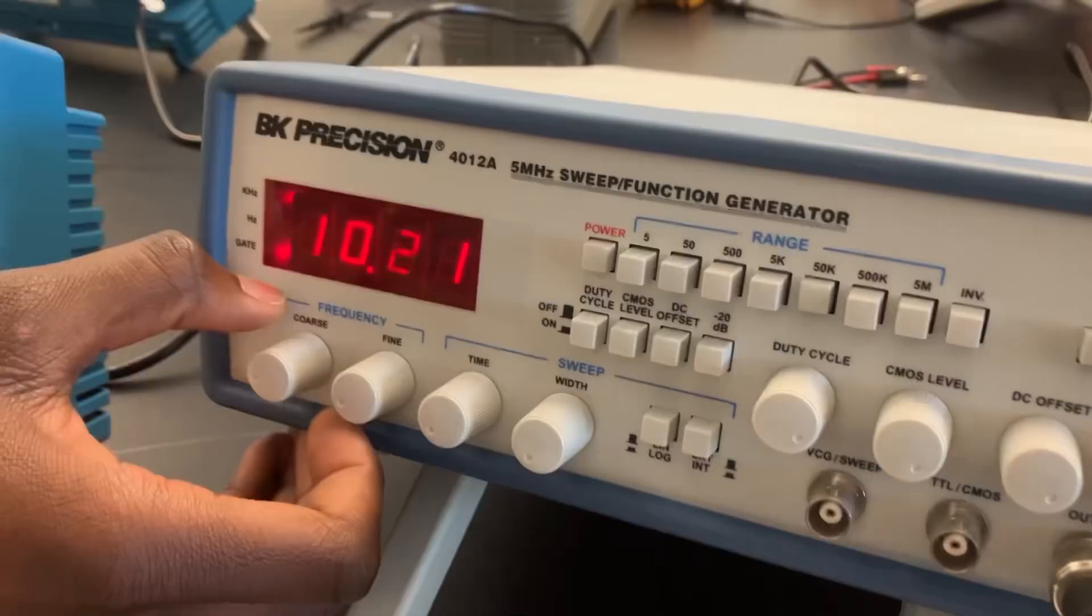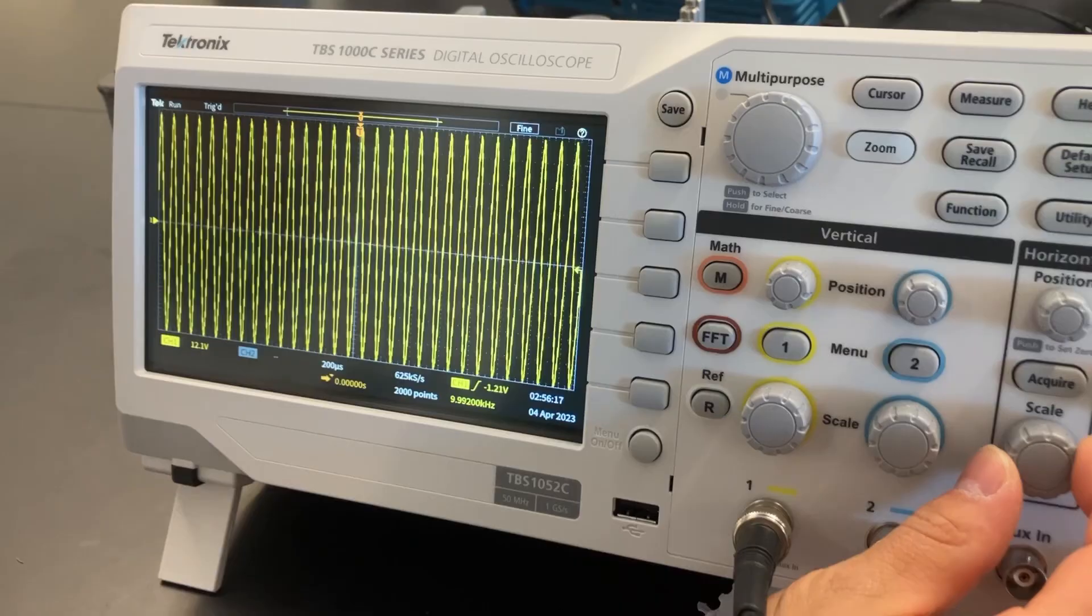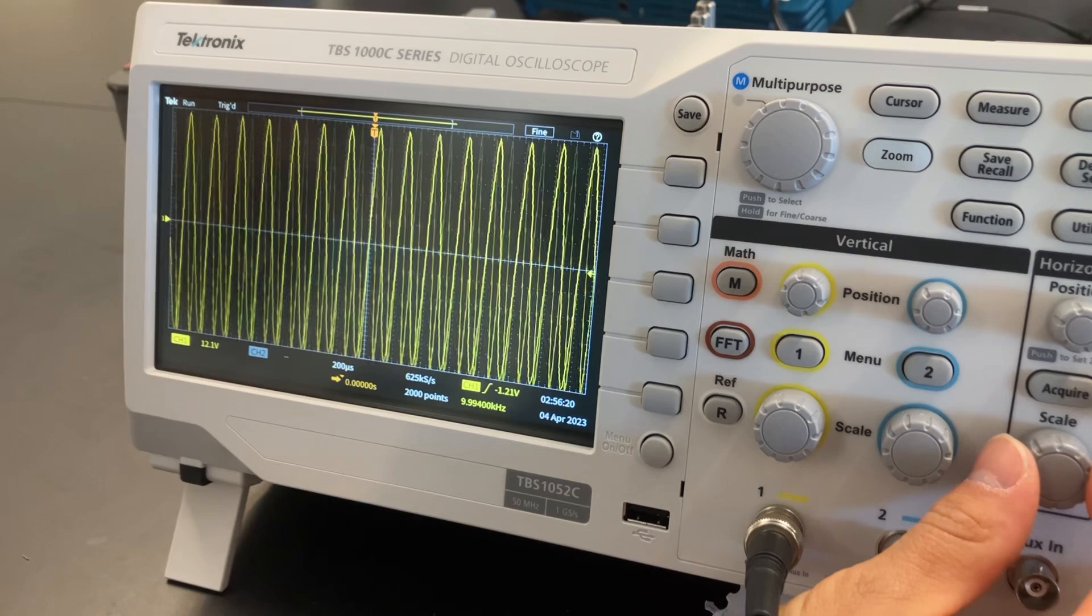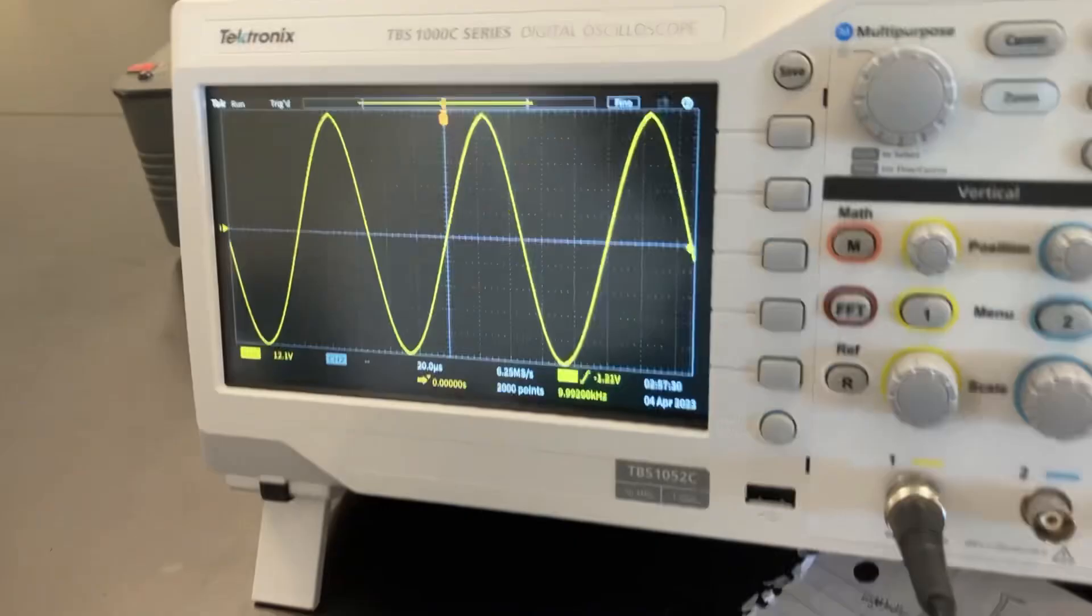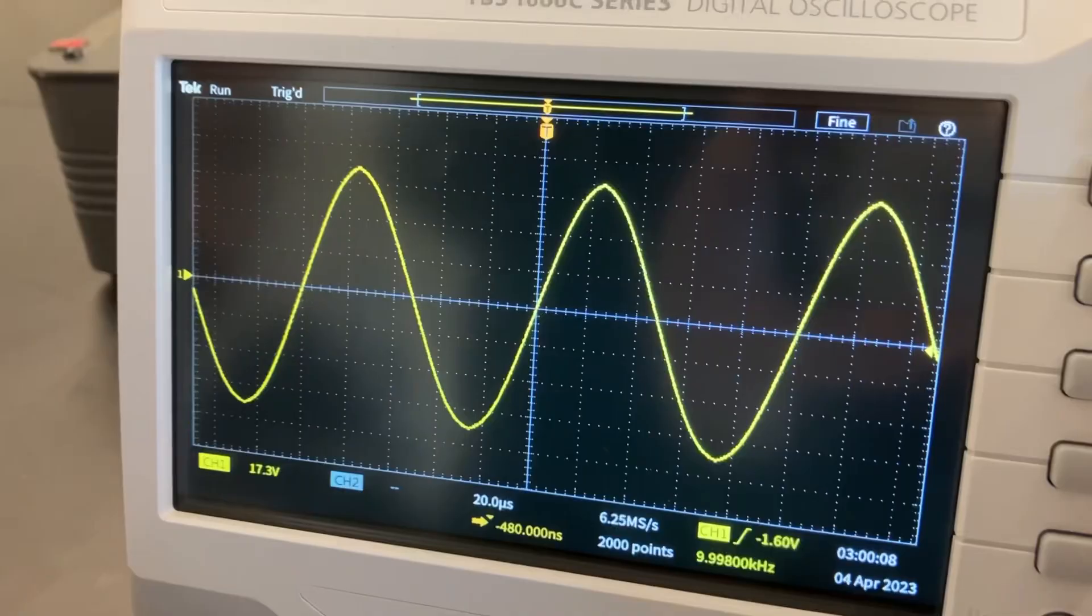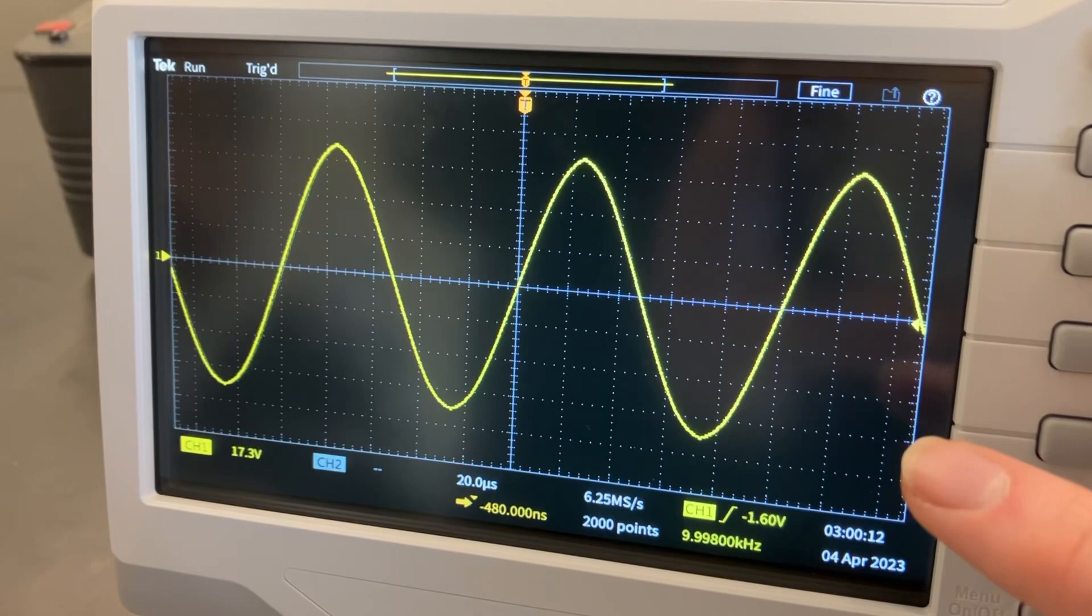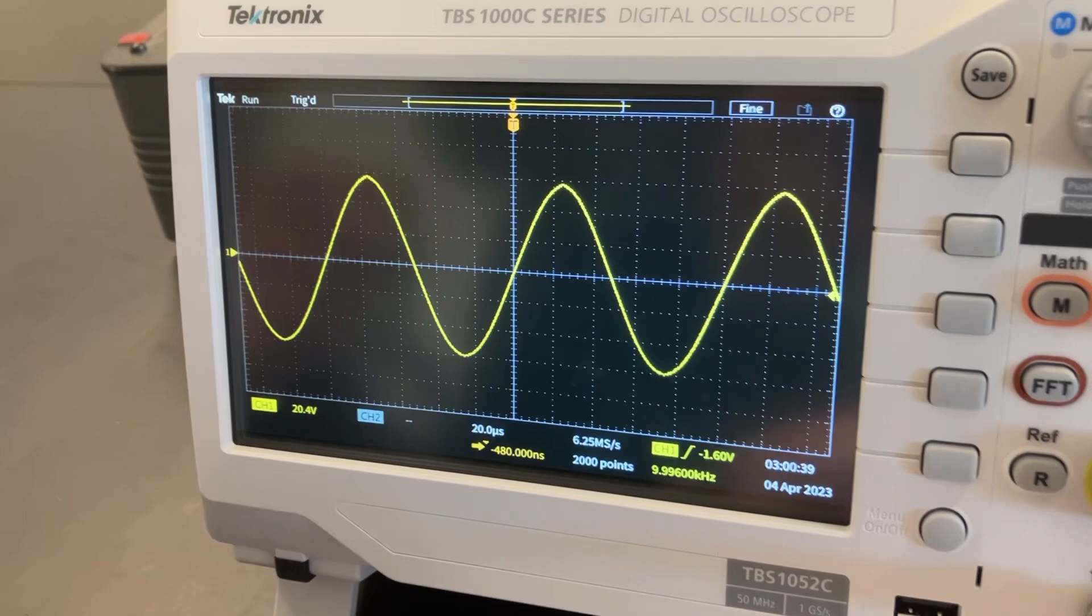We're going to zoom in and get a few of these cycles on the screen. We just use the scale button down here. We've got three cycles at 12.1 volts and 20 microseconds. We're going to adjust this to fit three on the bottom and three on the top by zooming down. Our new results are 20.4 volts, 20 microseconds, and we still have three sine waves.